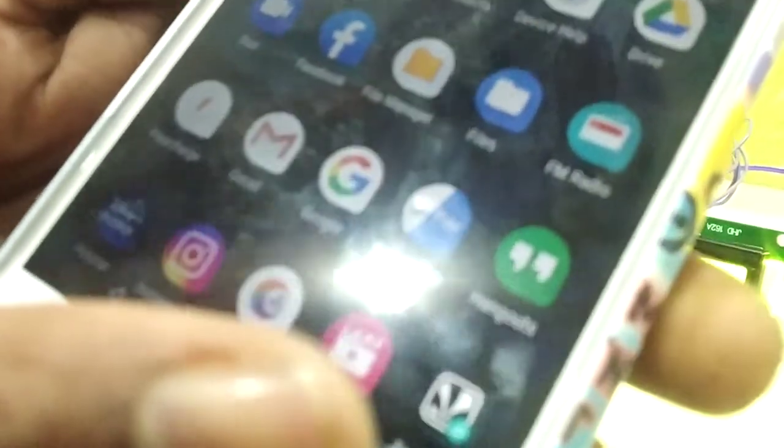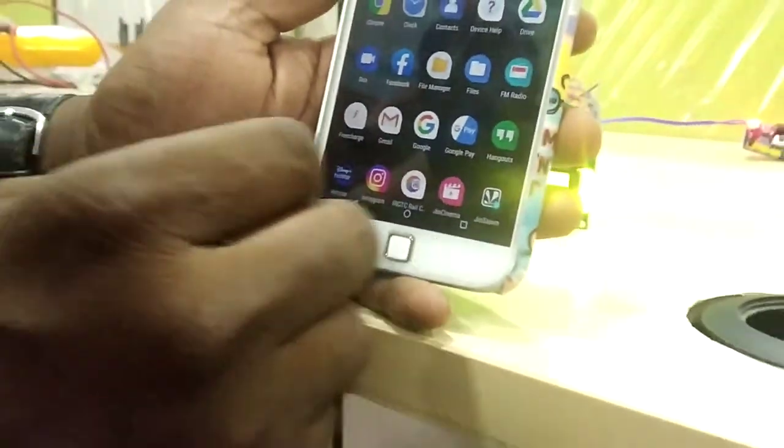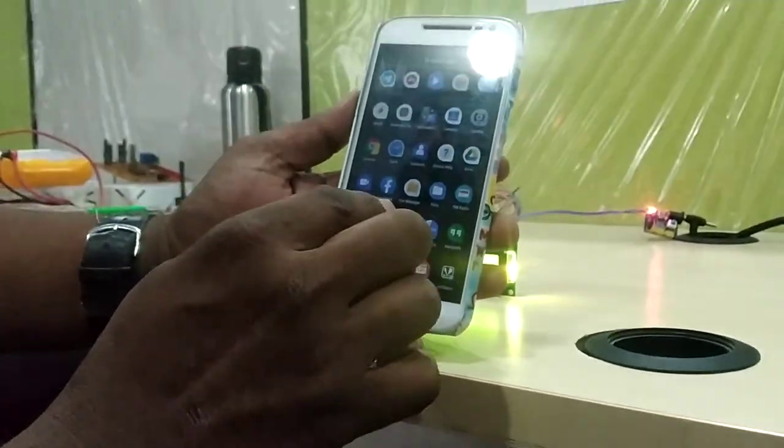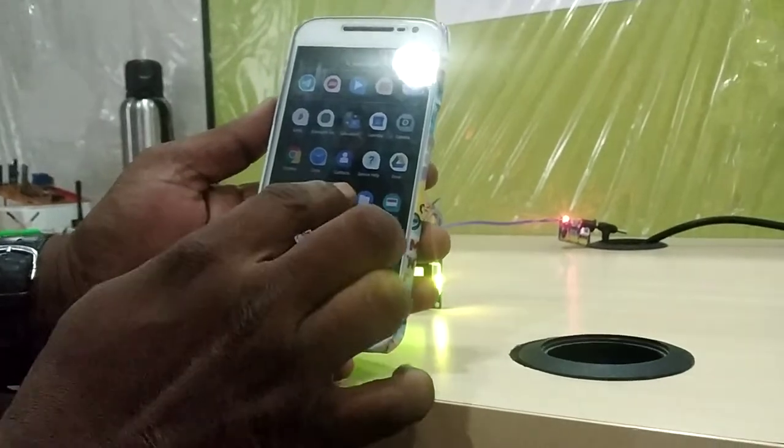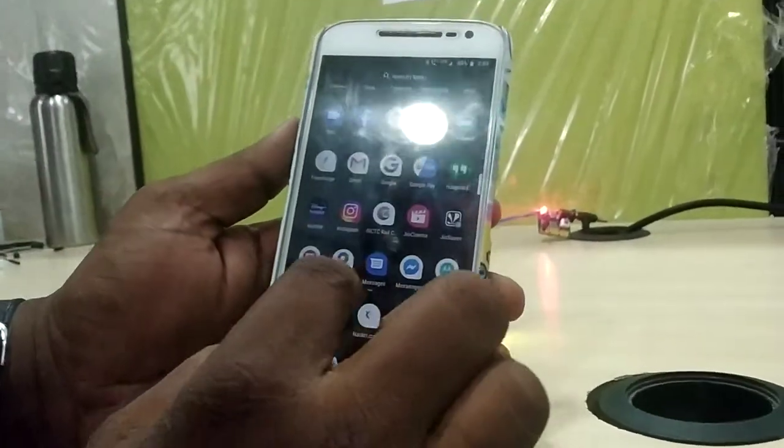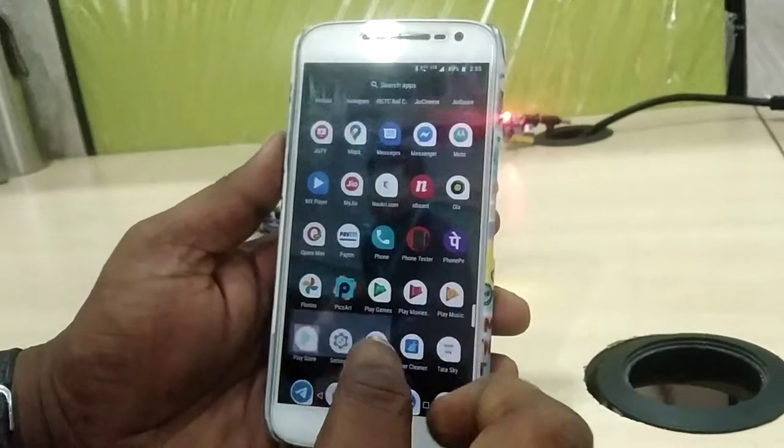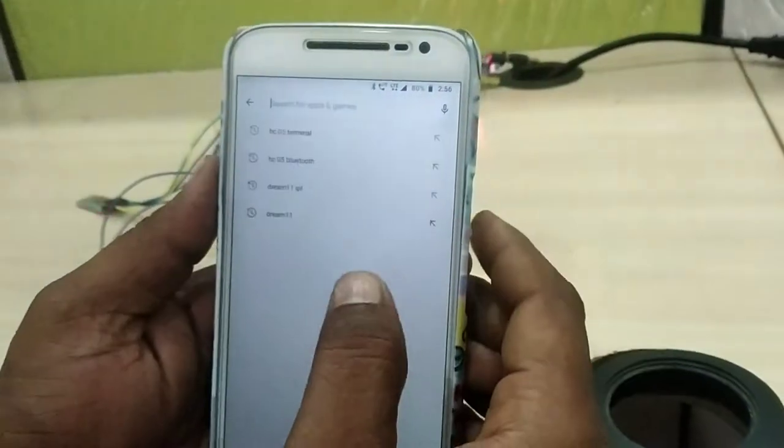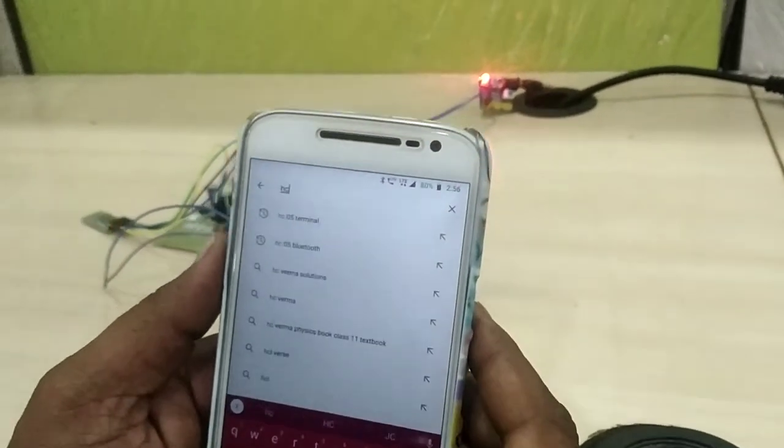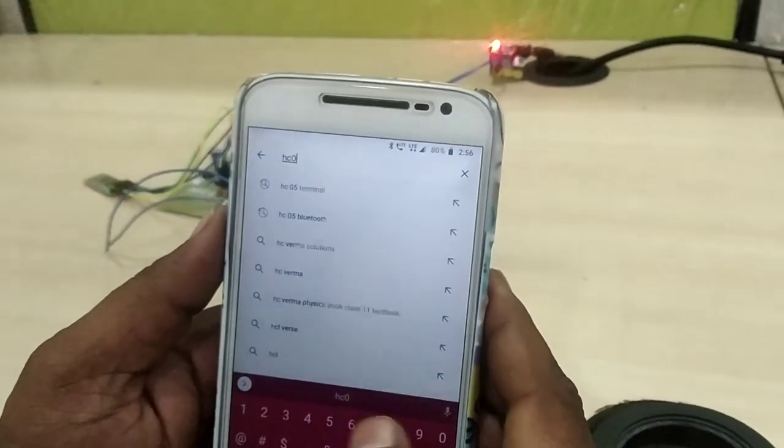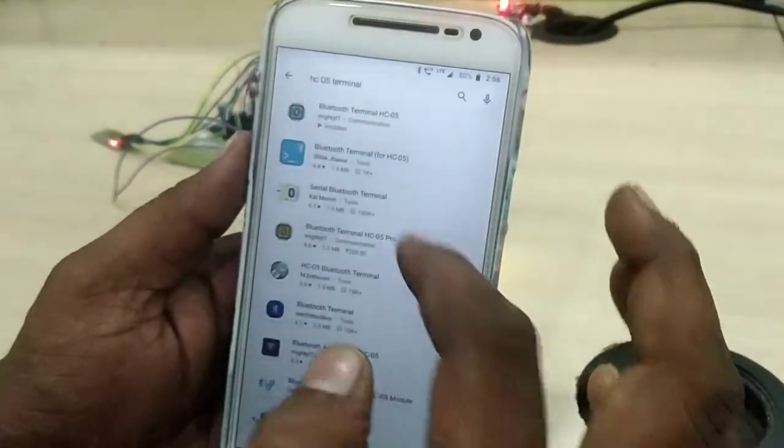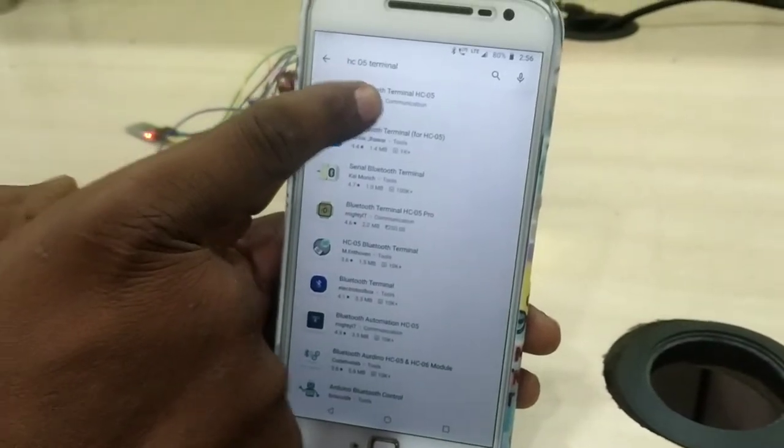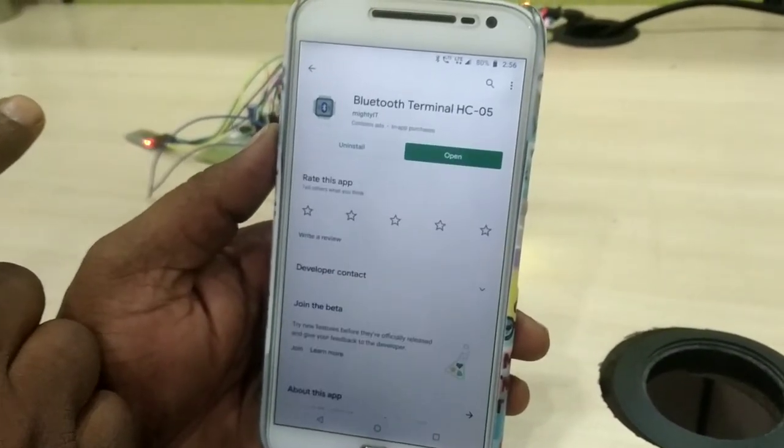But you have to do some necessary action with the mobile phone. Just download one Bluetooth terminal app from the Play Store. This HC05 terminal app you need to download from the Play Store. Just type HC05.